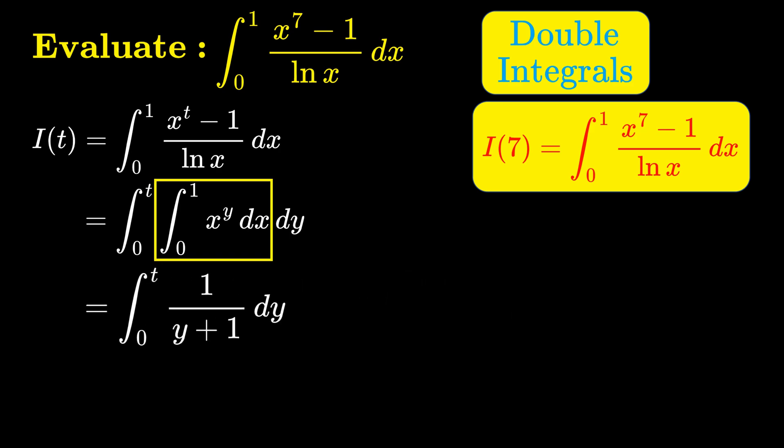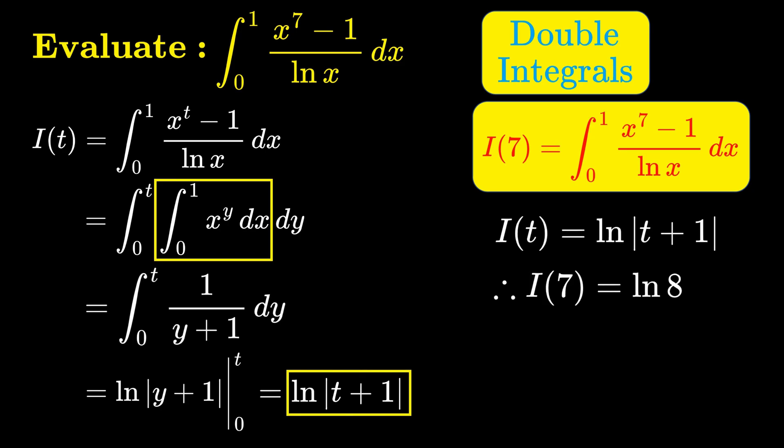And then integrating 1 over y plus 1 with respect to y is natural log of the absolute value of y plus 1. Evaluating at 0 and t will just give us natural log of absolute value of t plus 1. And this is the function I of t, which means I of 7 is just natural log of 8 when t is equal to 7.